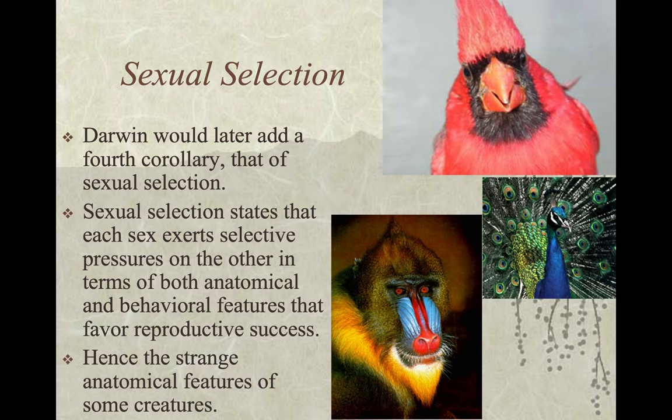Darwin would later add a fourth corollary — that of sexual selection. Sexual selection states that each sex exerts selective pressures on the other in terms of both anatomical and behavioral features that favor reproductive success. Hence the strange anatomical features of some creatures, such as cardinals — you can see a cardinal flying toward you from a mile away, they are so bright red.